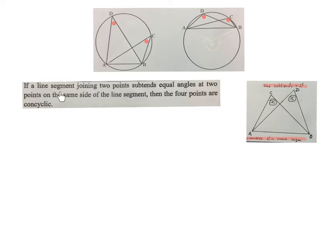If a line segment joining two points, in other words this AB, subtends equal angles at two other points C and D on the same side of the line segment, then the four points are concyclic. So comparing the two, this one says that if I have a circle and two angles in the same segment, they are equal. This one says if I have two angles on the same base, then they will lie on a circle.